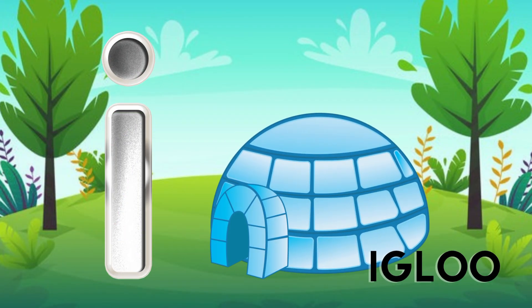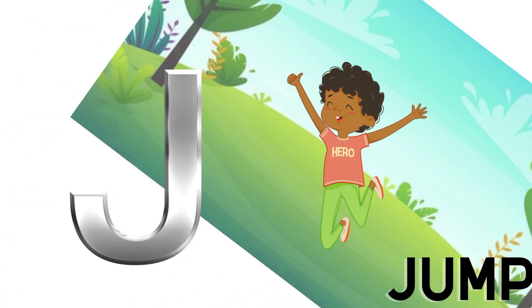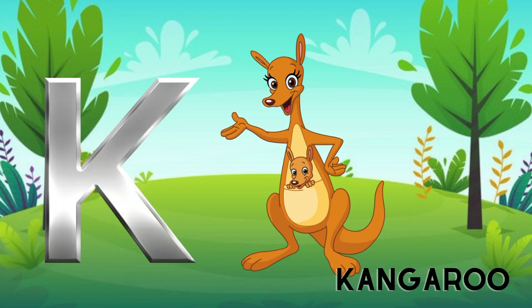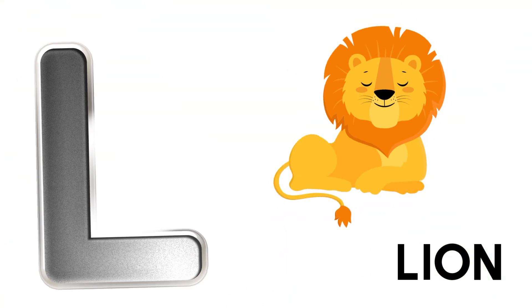I is for igloo, i-i-igloo. J is for jump, j-j-jump. K is for kangaroo, k-k-kangaroo. L is for lion, l-l-lion.